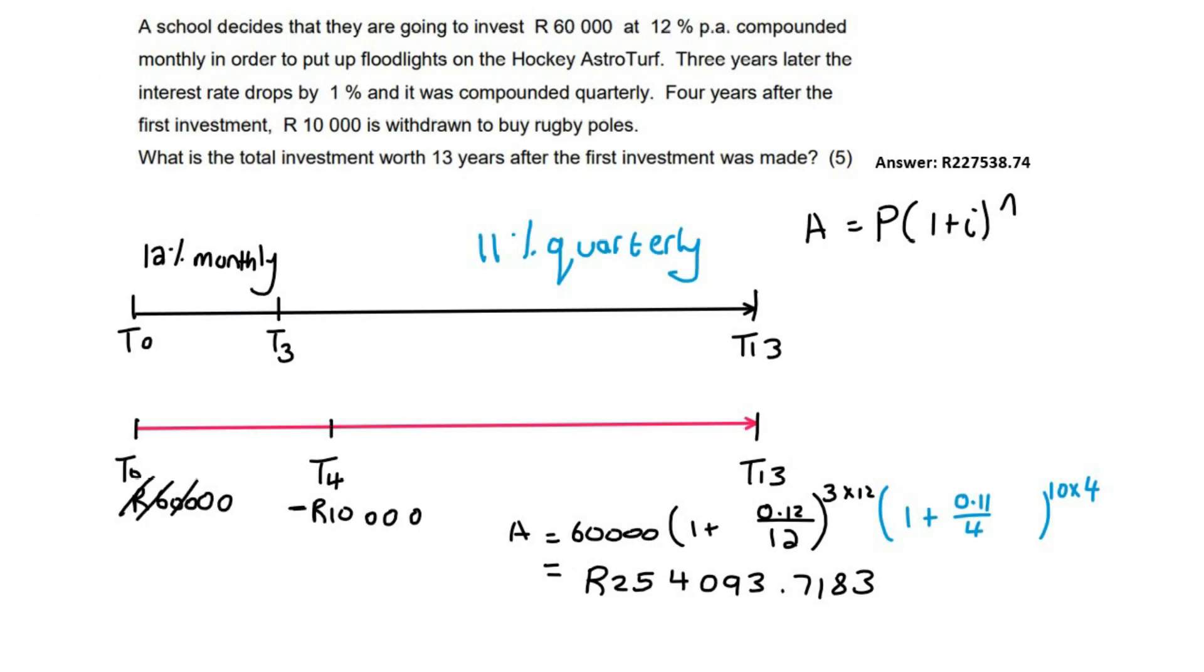So now I've done the 60,000 Rand. And so you ignore that. Then you go to the next payment. And so that's going to be this one over here. And remember that that starts at T4.